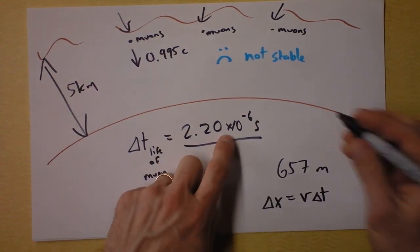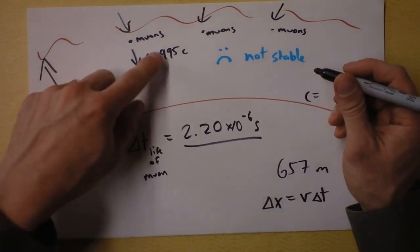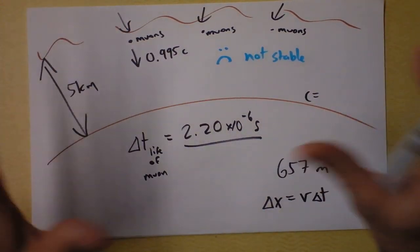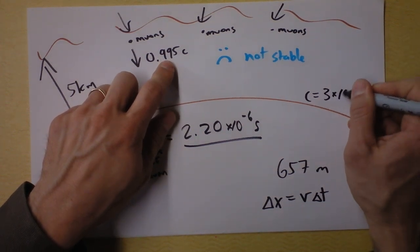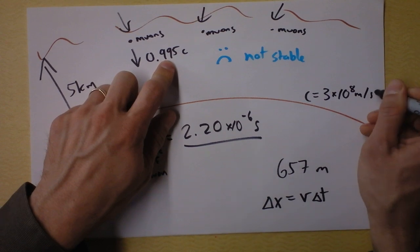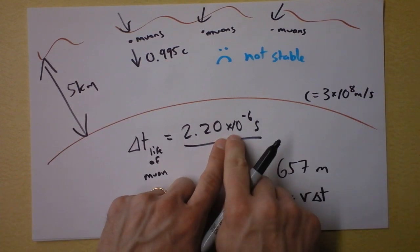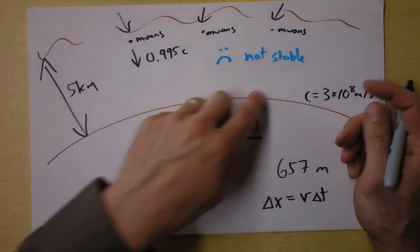So perhaps you'll notice that if, whoa, if they are created 5 kilometers up and they only live for this time, that none of them will make it to the surface of the earth. Dang. They're only going to go 657 meters. Try it out. The distance that they go is the speed that they have times the time that they get. And this time, times light speed, c is, I mean, we, this is just about light speed, right? Whoa, as long as we're not pretending there are any relativistic effects. That is just about light speed, which is 3 times 10 to the eighth meters per second. But the point is, they're so incredibly short-lived that they will never make it to the surface.